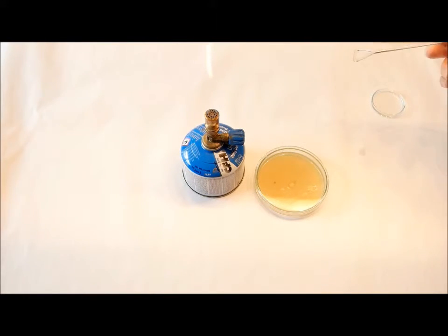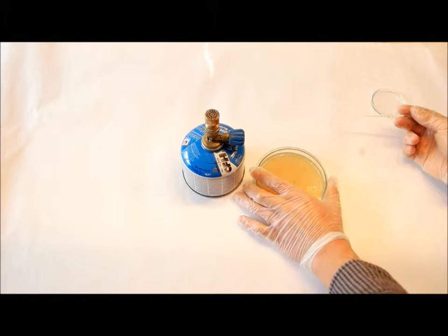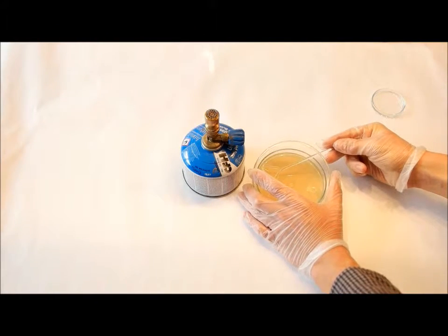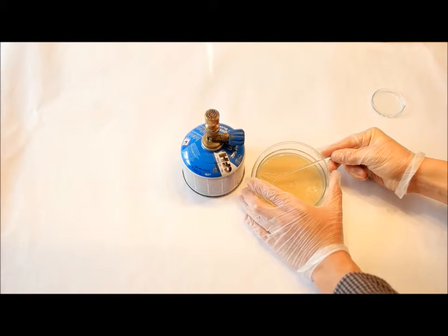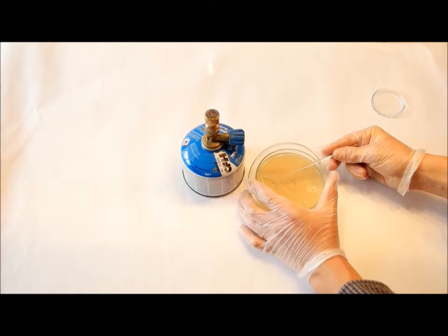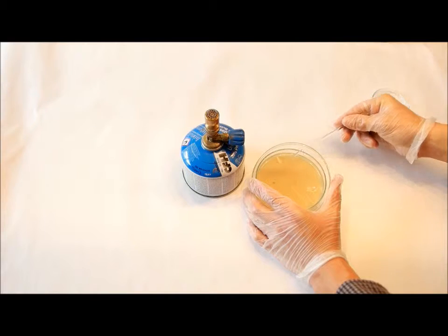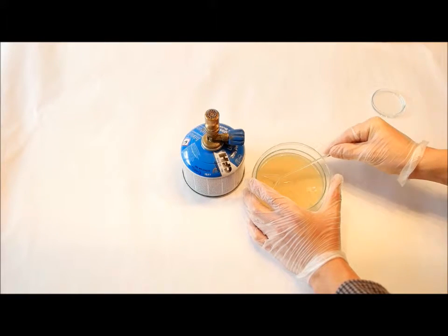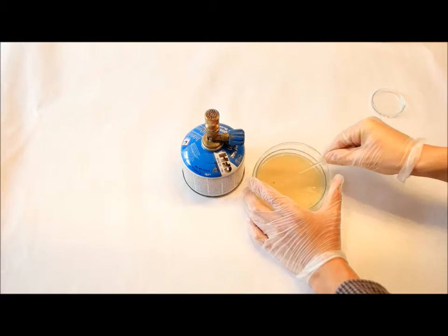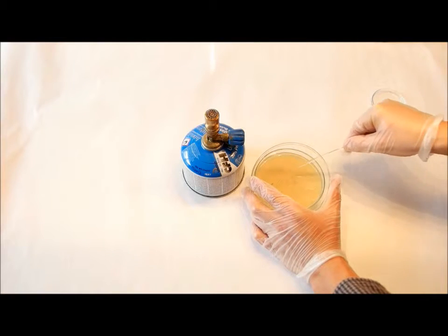Wait until the flame has gone away. First cool your spreader rod at the side of your agar plate. And then take the drop and put that drop on the whole surface of your agar plate.